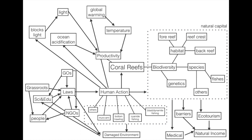Productivity of a coral reef is affected by many factors, and it is very vulnerable to human activity. There are many human actions that can have a negative impact on coral reefs. One example is muroami, which is a fishing technique that uses an encircling net together with pounding devices.